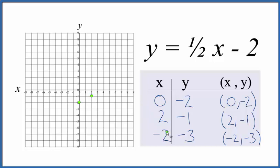and y is negative one. And finally, we have x is negative two, y is negative three. So negative two, and then down to negative three.